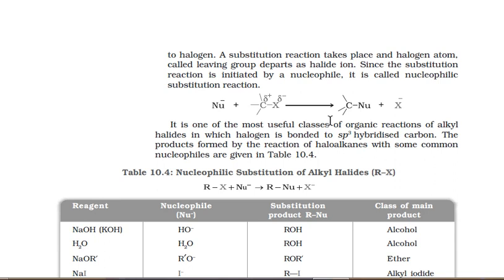Whenever a nucleophile attacks on the carbon of an alkyl halide, the carbon-halogen bond is cleaved towards the halogen, because halogen is more electronegative than carbon. Halogen departs as X⁻ (halide ion) — it is the leaving group. The nucleophile attacks the carbon, the halogen moves away, giving a halide ion and a new carbon-nucleophile bond.